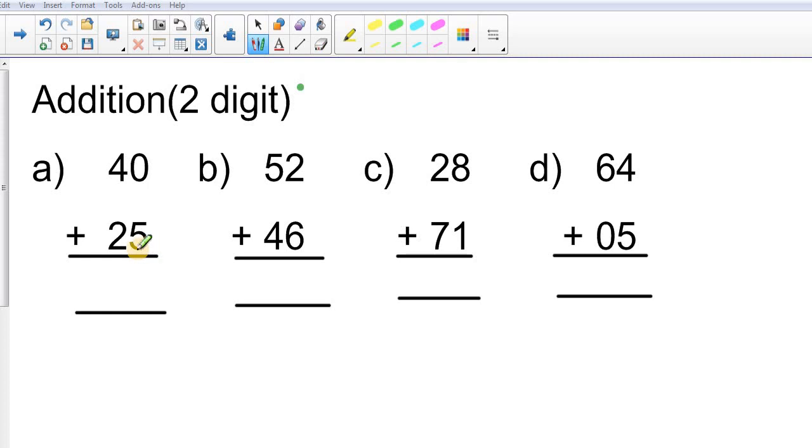Now this is the sum which is given, 40 plus 25. So to start from ones we are going to encircle the ones number with green color. Now you are going to add 5 plus 0. You are standing on 5. You have to jump zero steps. Can you jump? No. So your answer itself is 5. I am going to use the same color to write my answer.